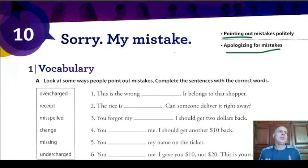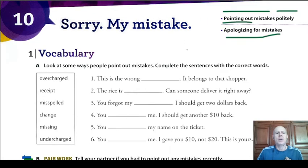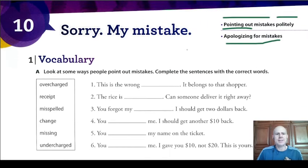Most of the time, we don't want other people to get sad or angry because of what we are saying. So when we point out mistakes, we should do that politely, to help people not to get sad or feel bad. The first exercise is about some ways that people point out mistakes.